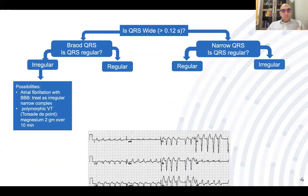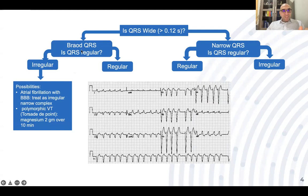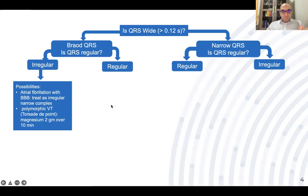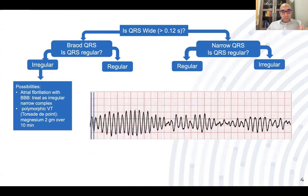For irregular wide complex tachycardia, consider atrial fibrillation with bundle branch block — treat as atrial fibrillation. Another possibility is polymorphic ventricular tachycardia or torsades de pointes. The treatment for torsades de pointes is magnesium sulfate — consider 2 grams IV magnesium sulfate infusion over 10 minutes.